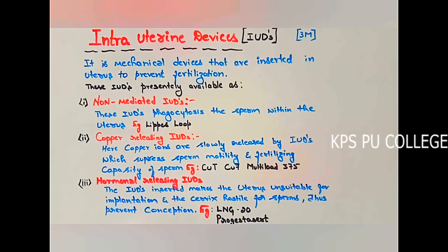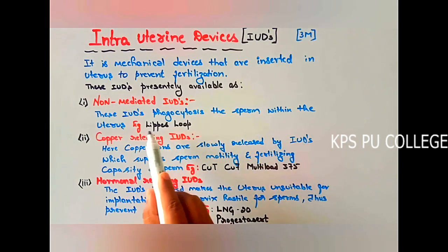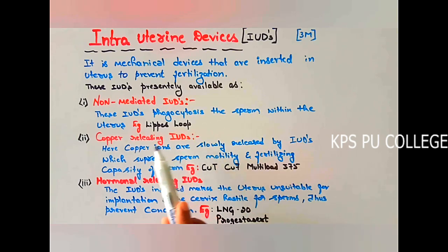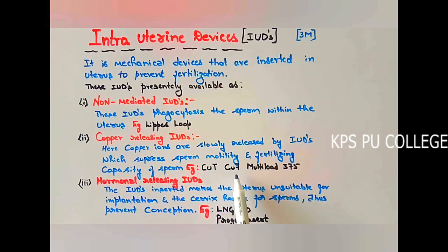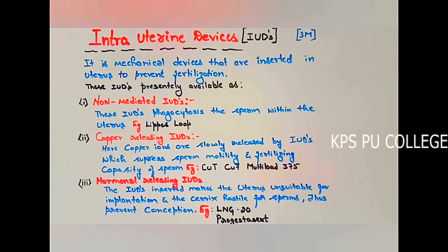To summarize intrauterine devices: these are devices inserted in the uterus to prevent fertilization. They are spiral ring-like or loop-like structures made from plastic, copper, or stainless steel, inserted by a physician. Three types: non-medicated IUDs which phagocytose the sperm (example: Lippes Loop); copper-releasing IUDs which suppress sperm motility and fertilizing capacity (examples: Copper-T, Copper-7, Multiload 375); and hormonal-releasing IUDs which make the uterus unsuitable for implantation and cervix hostile for sperm (example: LNG-20, Progestasert).